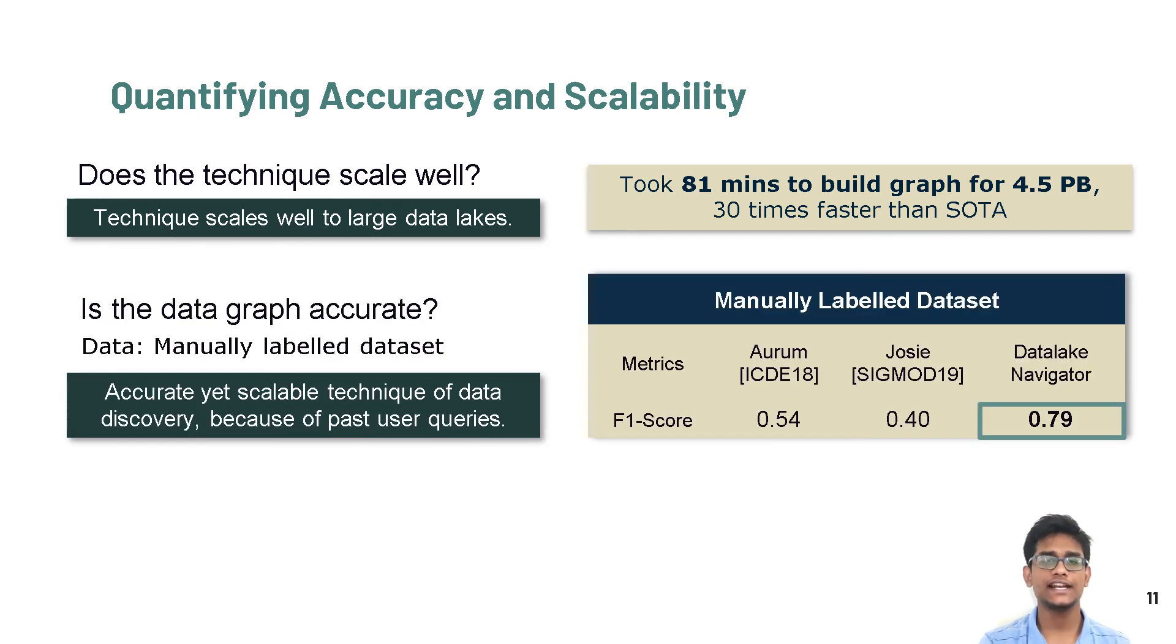We also created a dataset by manually labeling all related pairs in the dataset. In this dataset, our approach significantly outperformed other state-of-the-art methods and gave us an F1 score of 0.79 compared to 0.54 with Aurum and 0.4 with Josie. Thus, our system can accurately learn characteristics from past user queries and build a data graph.